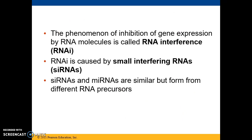Scientists found that injecting double-stranded RNA molecules into a cell somehow turns off the expression of a gene that has the same sequence as the RNA, and they call this phenomenon RNA interference, or RNAi. This RNA interference is brought about by small interfering RNAs, or siRNAs. These are similar in size and function to micro RNAs. The same cellular machinery generates both micro RNAs and siRNAs, and they can associate with the same proteins and have similar results, though they come from slightly different precursors.